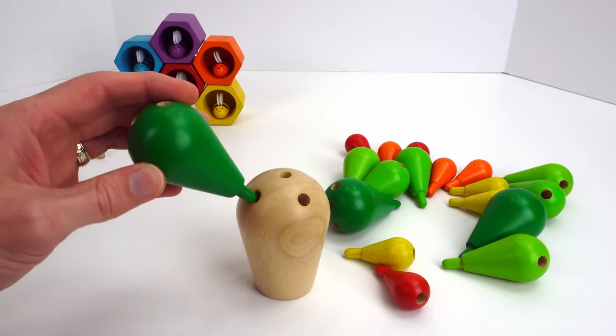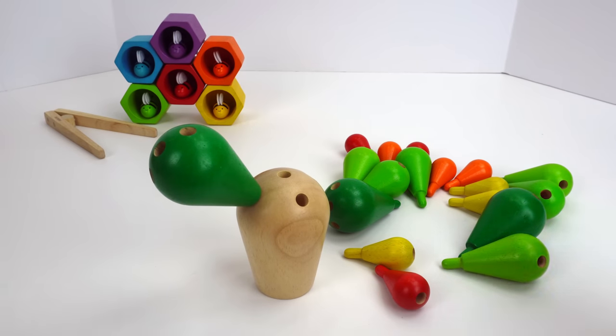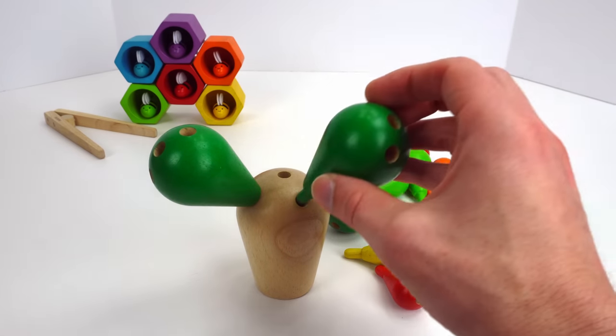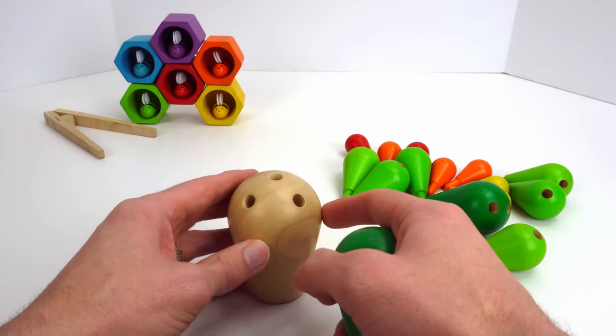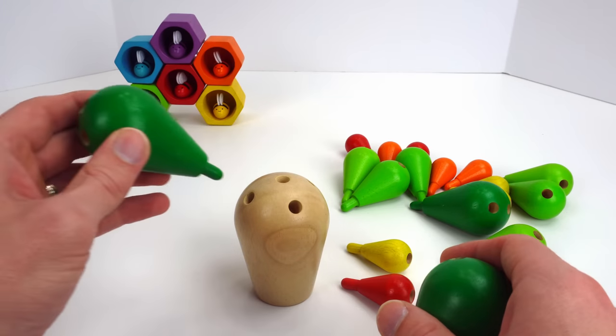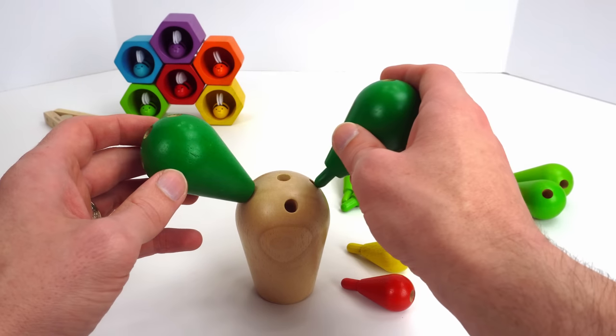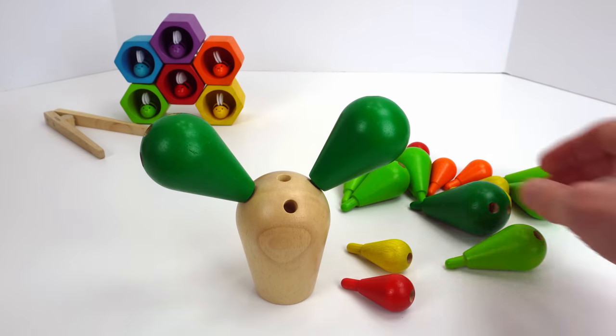And now let's add these bigger green arms. Oh, it fell over. This is a balancing cactus, so we've got to make sure to balance it. Let's try that again. Put one here, put one here. That way it'll be even.